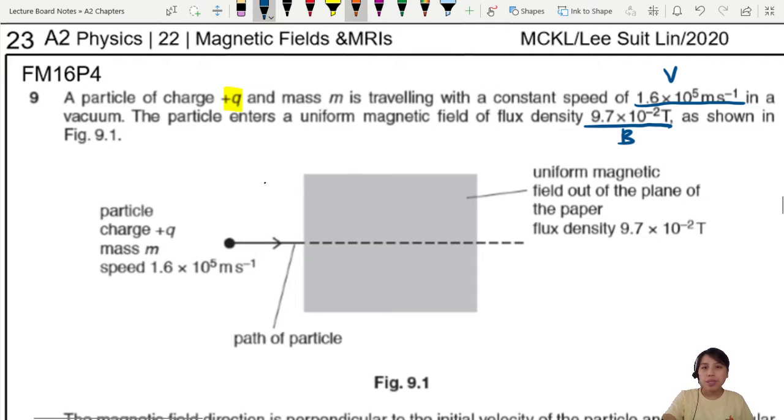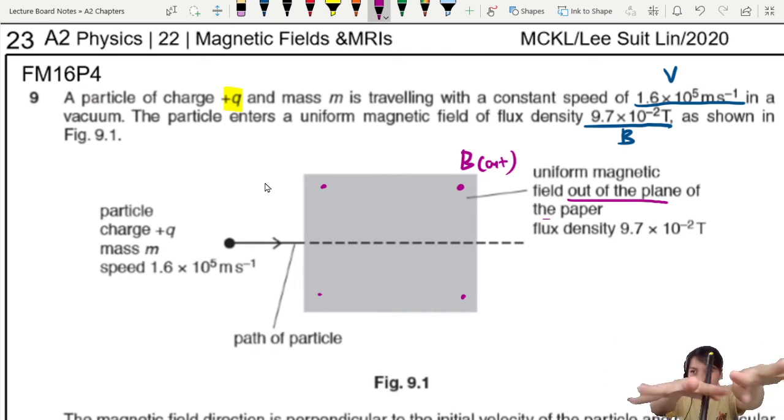This time they give you the direction of the magnetic field, out of the plane of the paper. So you can think, out of the plane, I usually draw a dot. B out of the plane. I'll just dot the four corners to remind us the magnetic field is coming out at your eyes, coming out of the screen going to you.